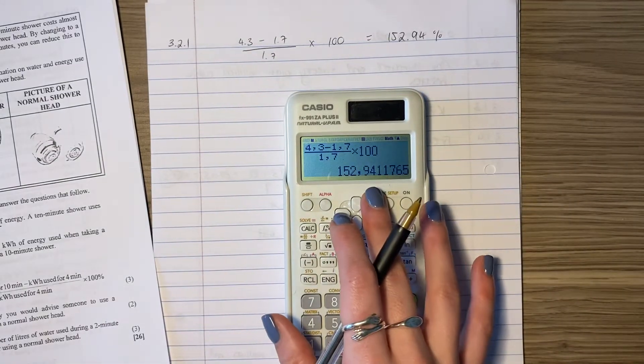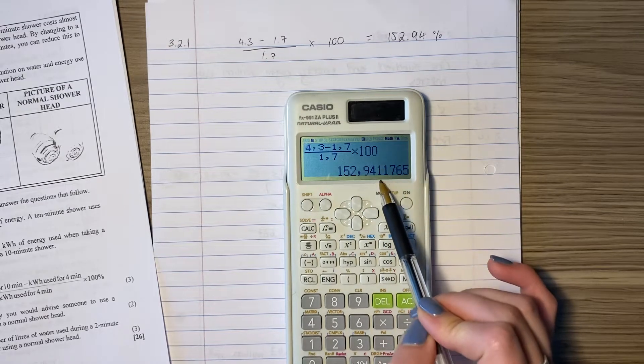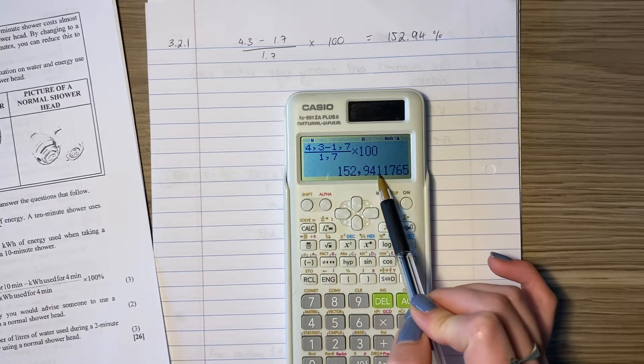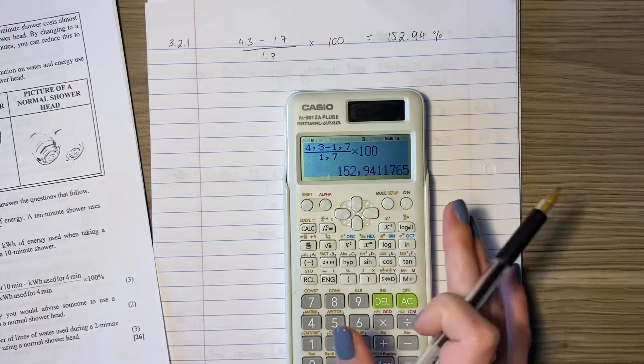Remember, I rounded it off to two decimal places. When I'm rounding off to two decimal places, we look at the third decimal. It's below five, therefore we round down, and that's our answer.